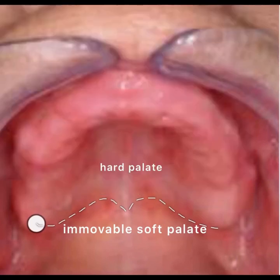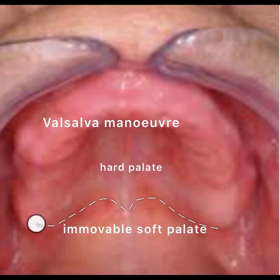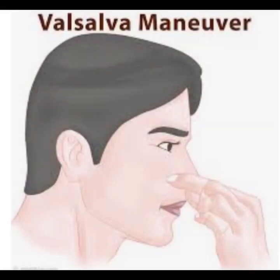The anterior vibrating line is determined clinically using the Valsalva maneuver, named after Italian physician Antonio Valsalva. The technique involves pinching both nostrils shut and asking the patient to gently blow through the nose, causing the soft palate to flex distinctly at the anterior vibrating line.